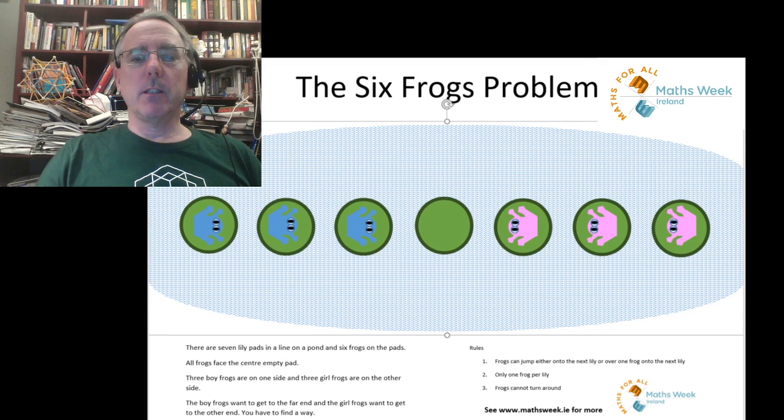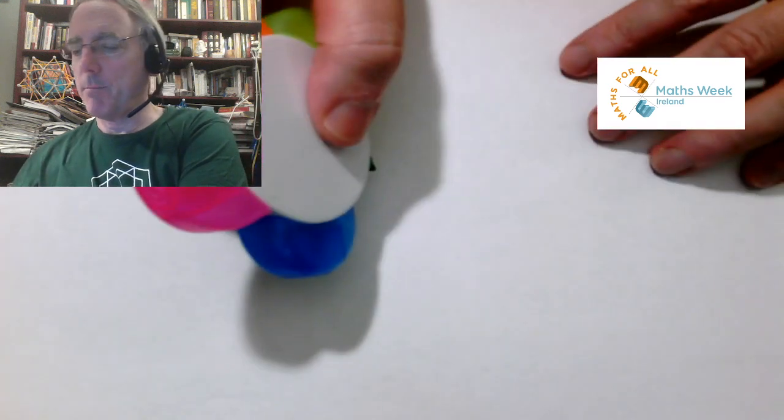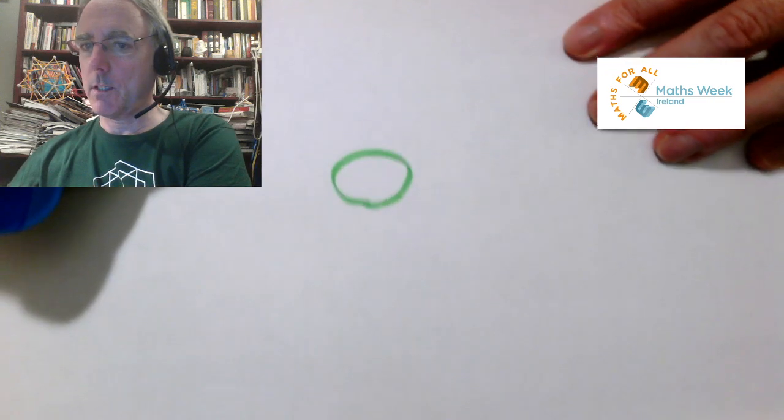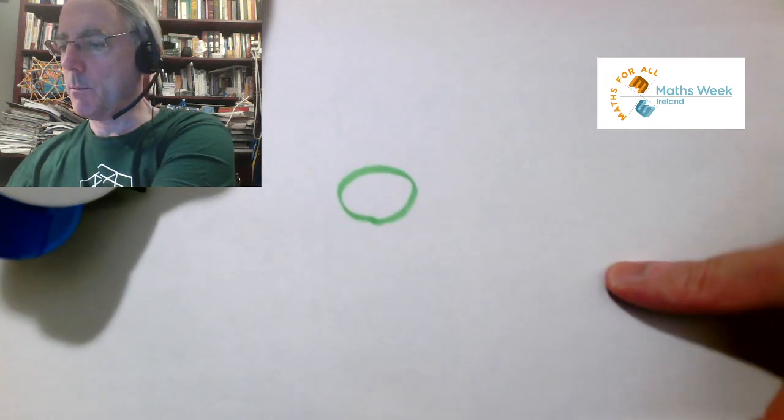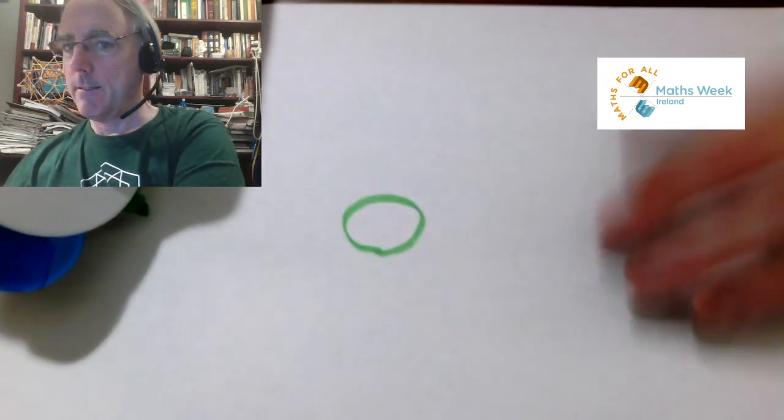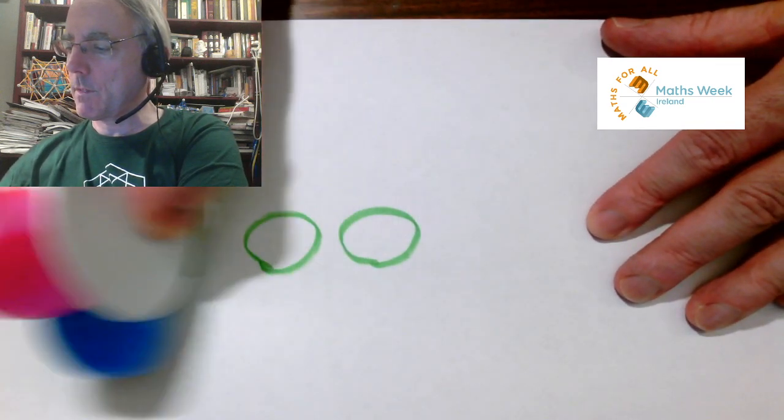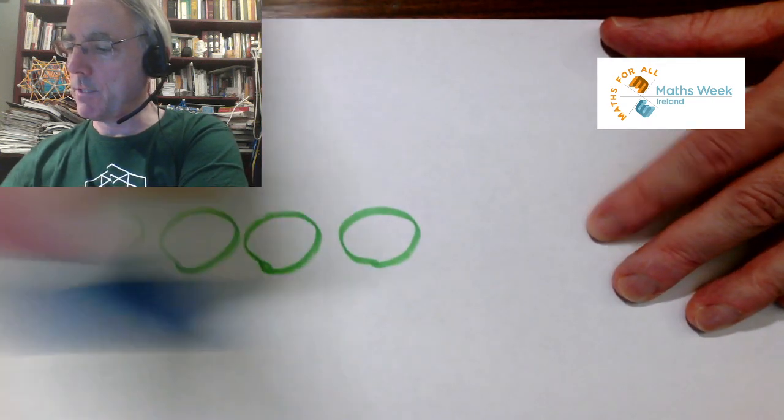And so let's have a look. Now a good start to any problem is often just drawing a picture. So let us try and set this up - we'll have to move that a little bit. These are our lily pads - we need seven.